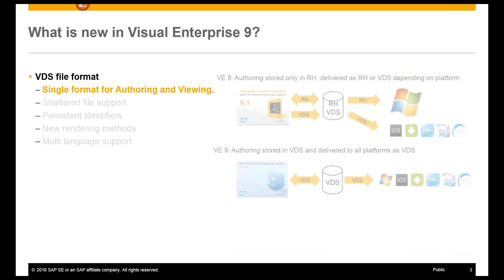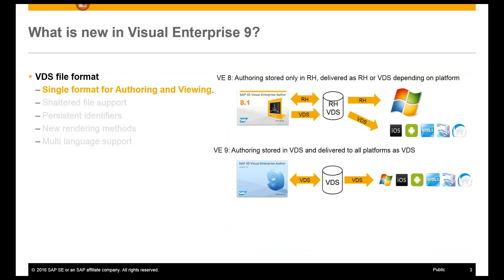In Visual Enterprise 9, regarding the VDS file format: previously in version 8 and prior, we used Visual Enterprise Author primarily with the RH file format as the authoring format — for creating work instructions, simplifying geometry, reorganizing, and adding materials. The RH file was displayed in the Windows environment, while VDS was used for mobile devices and HTML5 web solutions. With version 9, we've expanded VDS capabilities and are focusing on VDS as the primary format for both authoring and delivery.